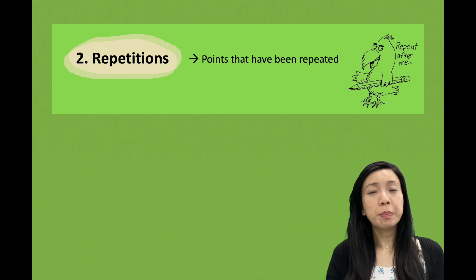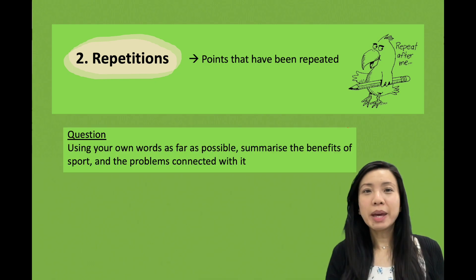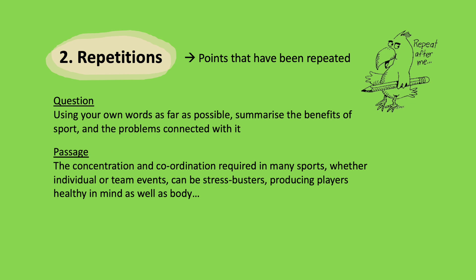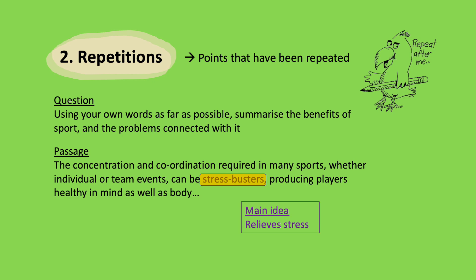The second thing to leave out is repetitions — points that have been repeated. Going back to the same question on benefits of sport, here's another point: 'The concentration and coordination required in many sports, whether individual or team events, can be stress busters, producing players healthy in mind as well as body.' The key word is stress busters, so the main idea is that exercise relieves stress. The part 'producing players healthy in mind as well as body' is a repetition — we've already identified the main idea, and stress relief is equivalent to being healthy in mind.